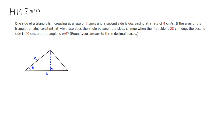I drew a triangle where the first side has length a, the second side has length b, and the angle is theta. So we're looking for d theta over dt. The first side is increasing at the rate of 7 centimeters per second, so da/dt equals 7.